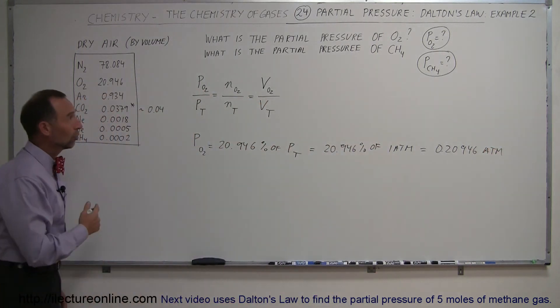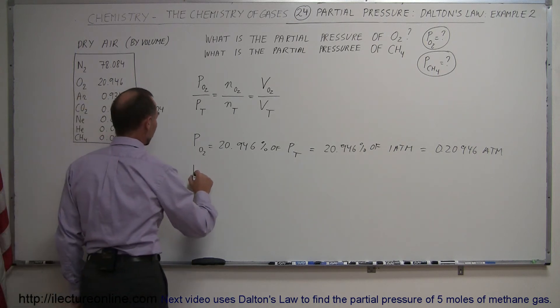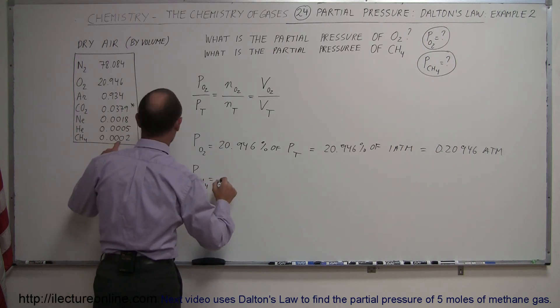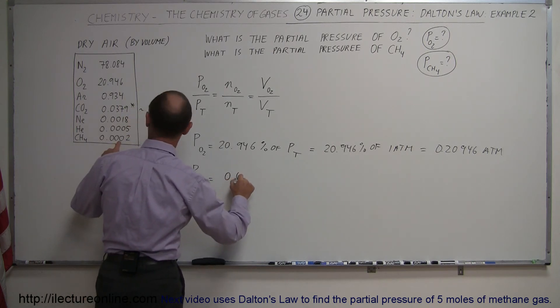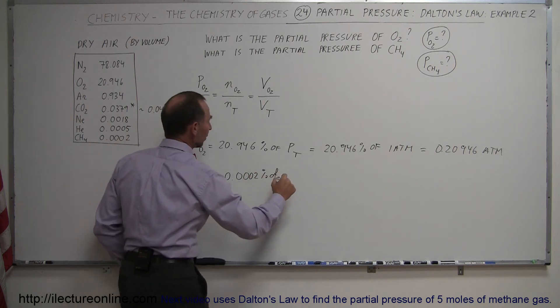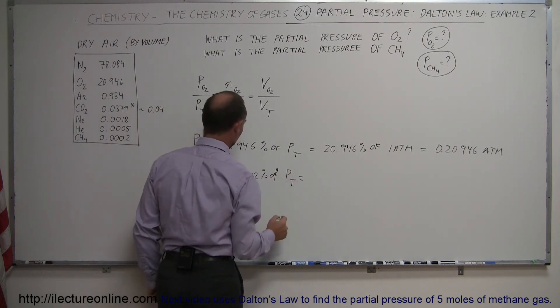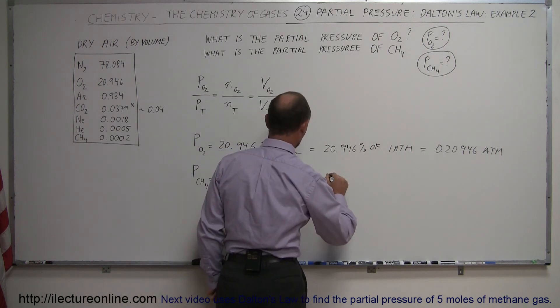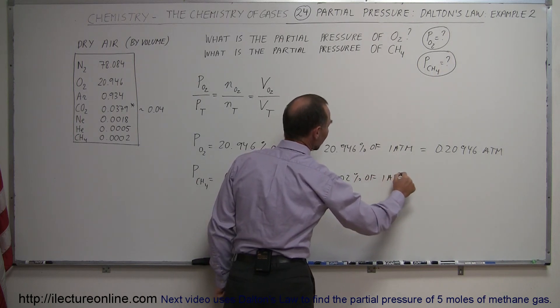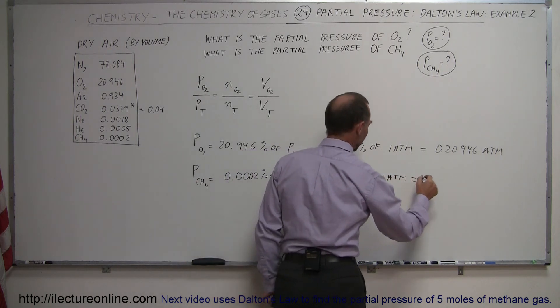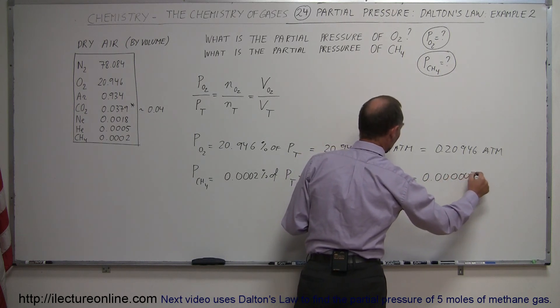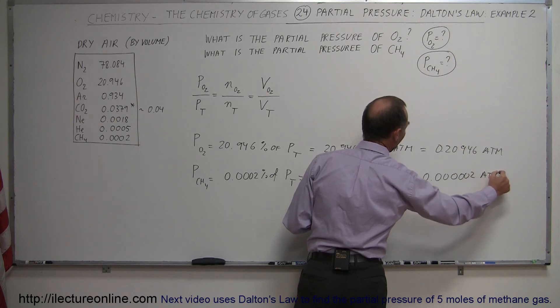All right, likewise, we can do the same for methane. The partial pressure for methane, that would be CH4, is equal to the abundance, which is 0.0002% of the total pressure, which is equal to 0.0002% of 1 atmosphere, which is equal to 0.000002 atmospheres.